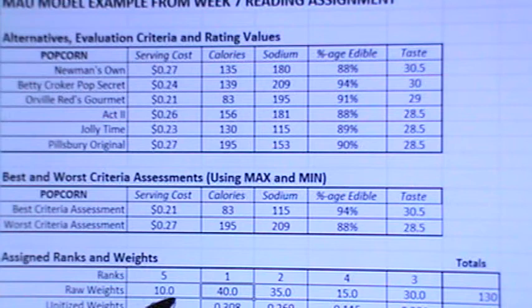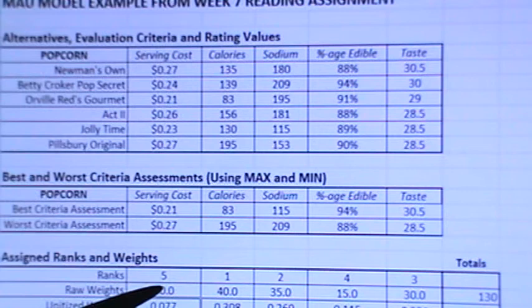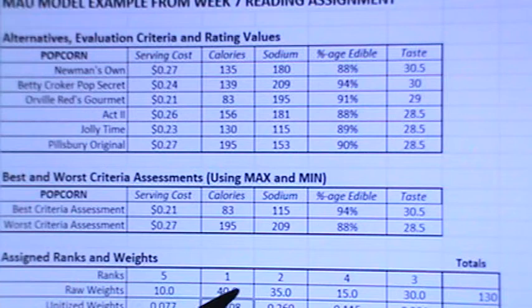Then I used a formula given in the book: I took B19 which is 10, divided it by 130, and came up with 0.077, and I copied that formula across. I divided 40 by 130 and got 30.8. When you go all the way across and add those up, they all add up to one.